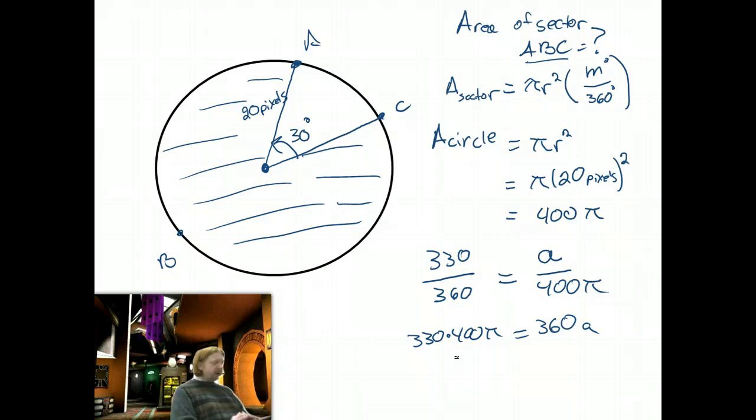So 330 times 400 puts me at 132,000. And then divide both sides by 360.